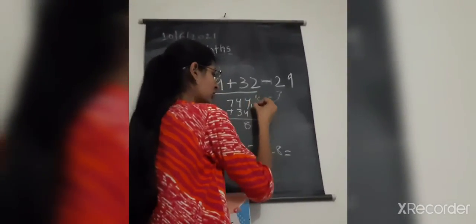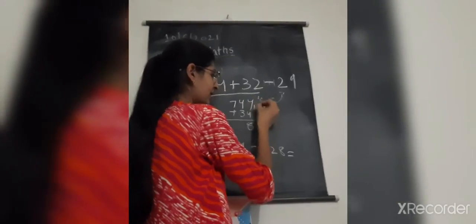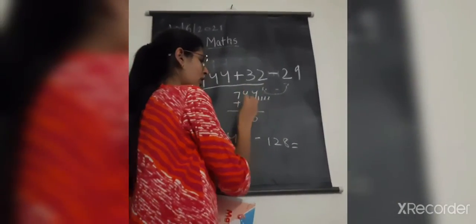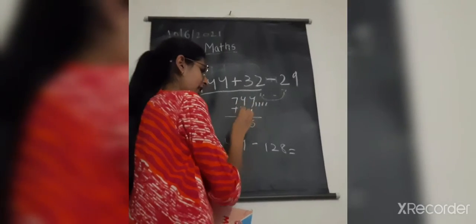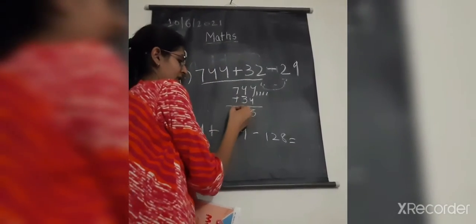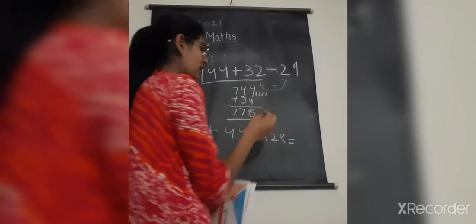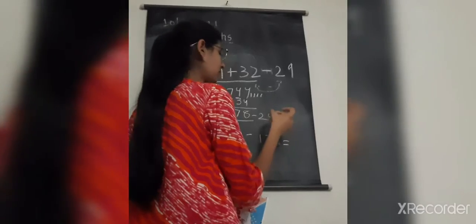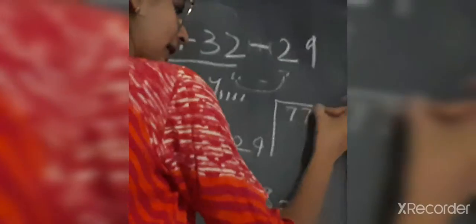Counting on for the tens: 1, 2, 3, 4, 5, 6, 7, 8. Then 4 plus 3 — counting: 5, 6, 7. So we have 77. Now 78 minus 29.